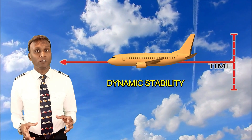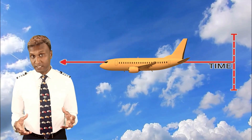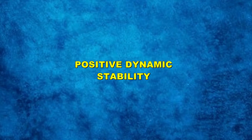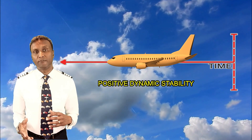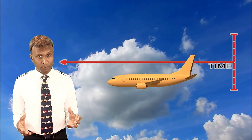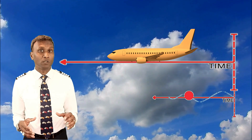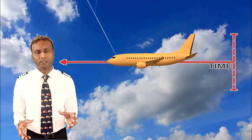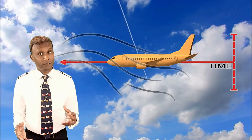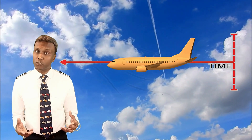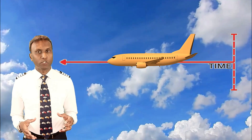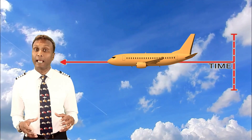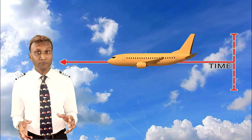Dynamic stability involves the aircraft's behavior over time after a disturbance. It determines whether any oscillations — periodic motions — dampen out or are amplified. Positive dynamic stability refers to the tendency of an aircraft to return to its original state of equilibrium after being disturbed, over time, with dampening oscillations. If the aircraft experiences a disturbance such as turbulence or a gust of wind, it will naturally correct itself and dampen any oscillations, eventually returning to stable flight conditions, enhancing safety and comfort for passengers and crew.